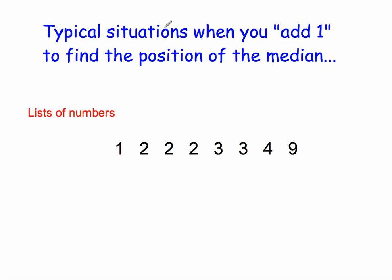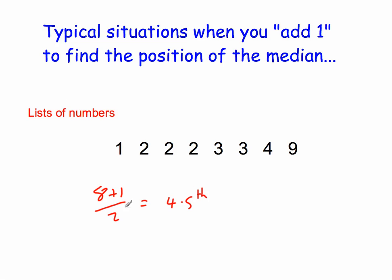Here are typical situations where you would add 1. If I wanted to find the median for a list of numbers, I would take the number of numbers, add 1, and halve it. So with 8 numbers, I do 8 + 1 = 9, divided by 2, which is the 4.5th value. For a list of numbers, you definitely add 1, because that's how you find the exact position of the median.